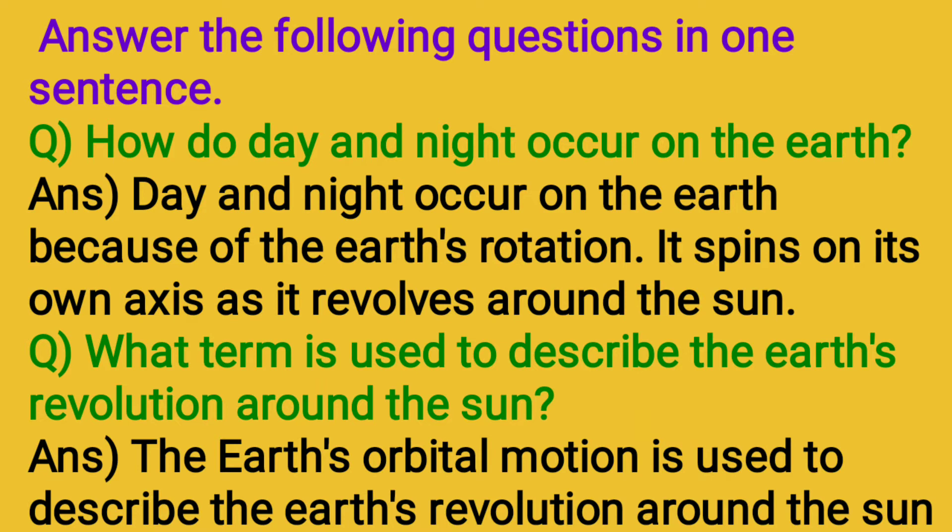It spins on its own axis as it revolves around the sun. Question: What term is used to describe the Earth's revolution around the sun? Answer: The Earth's orbital motion is used to describe the Earth's revolution around the sun.